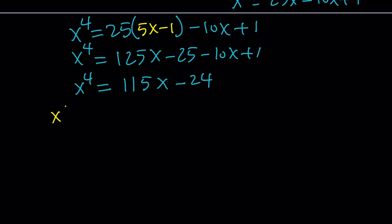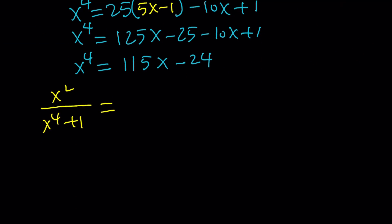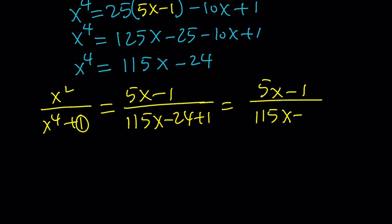Since we're trying to evaluate x squared over x to the 4th plus 1, we're going to replace x squared with 5x minus 1, as you know they're equivalent. And x to the 4th with 115x minus 24. But don't forget there's a plus 1 here. When you add that, this is going to become 5x minus 1 divided by 115x minus 24 plus 1 is going to give you minus 23. So far, so good.